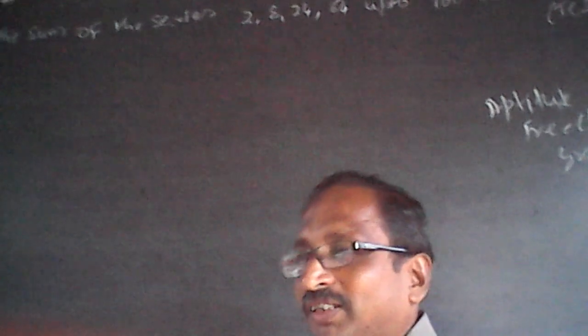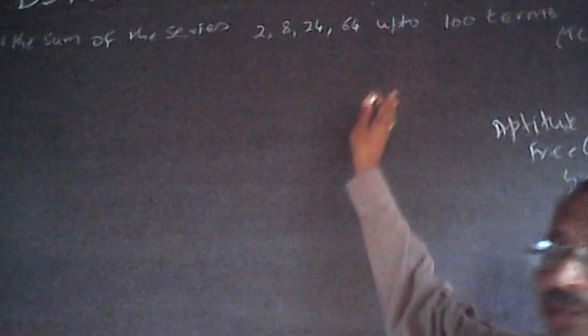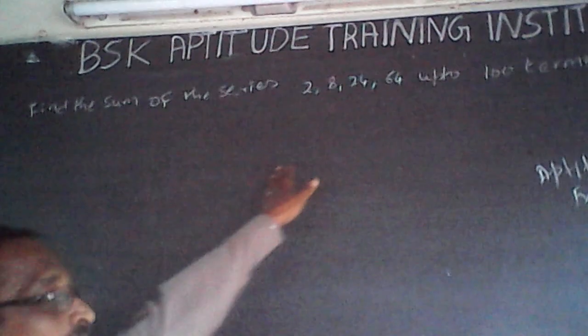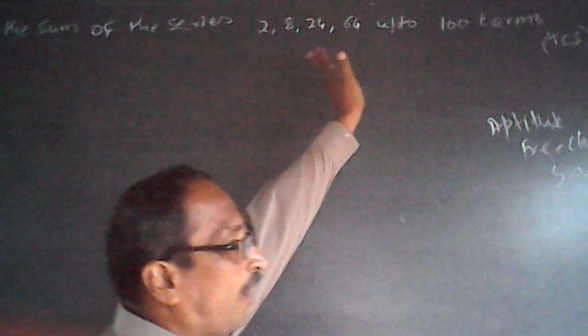Both steps are difficult: first finding out how the series works — 2, 8, 24, 64 — and then finding the sum of 100 terms. It's not an easy series, but by practice you can get it. In a real-time exam it is really tough, but with practice your mind becomes flexible enough to tackle different types of series problems.